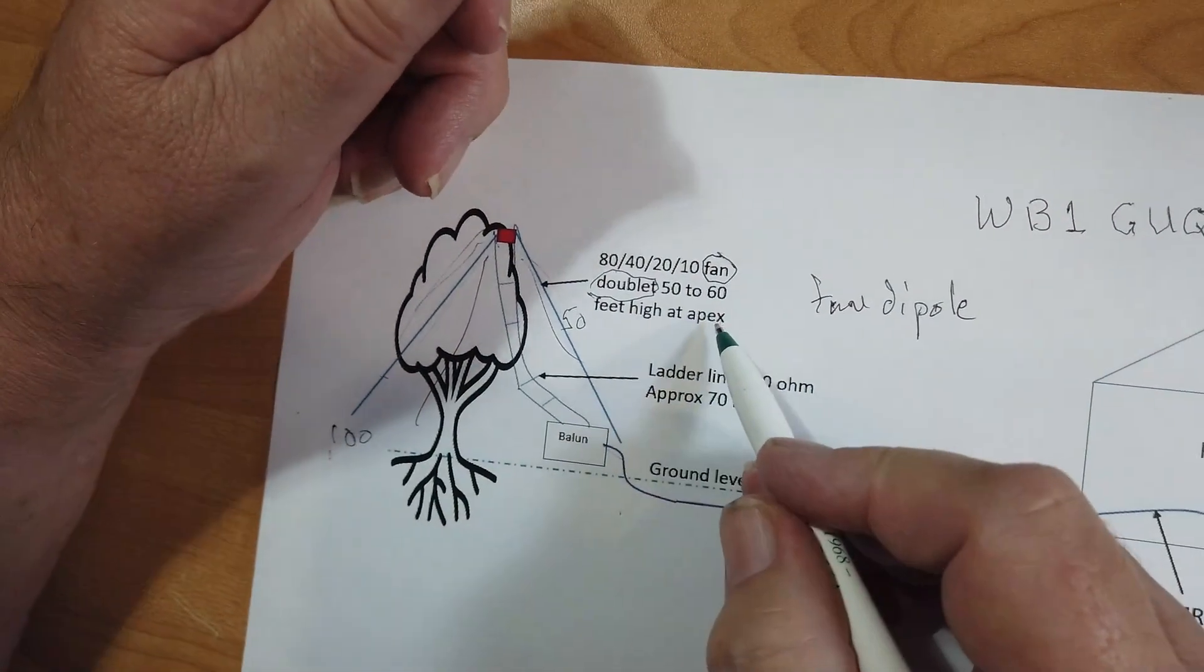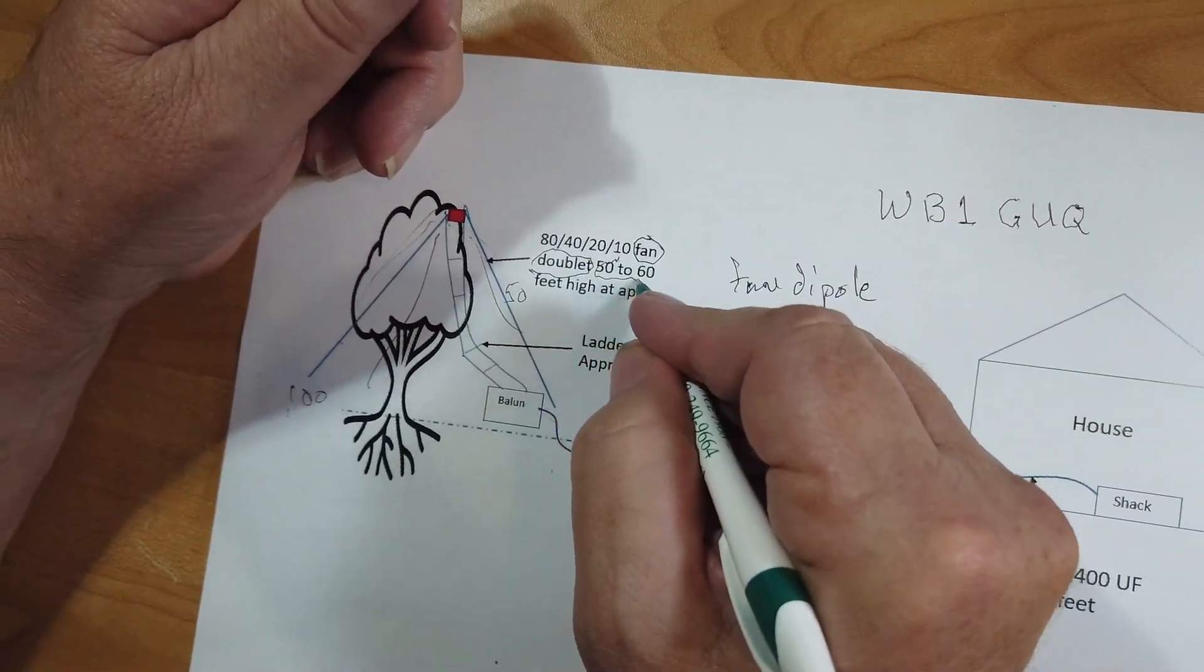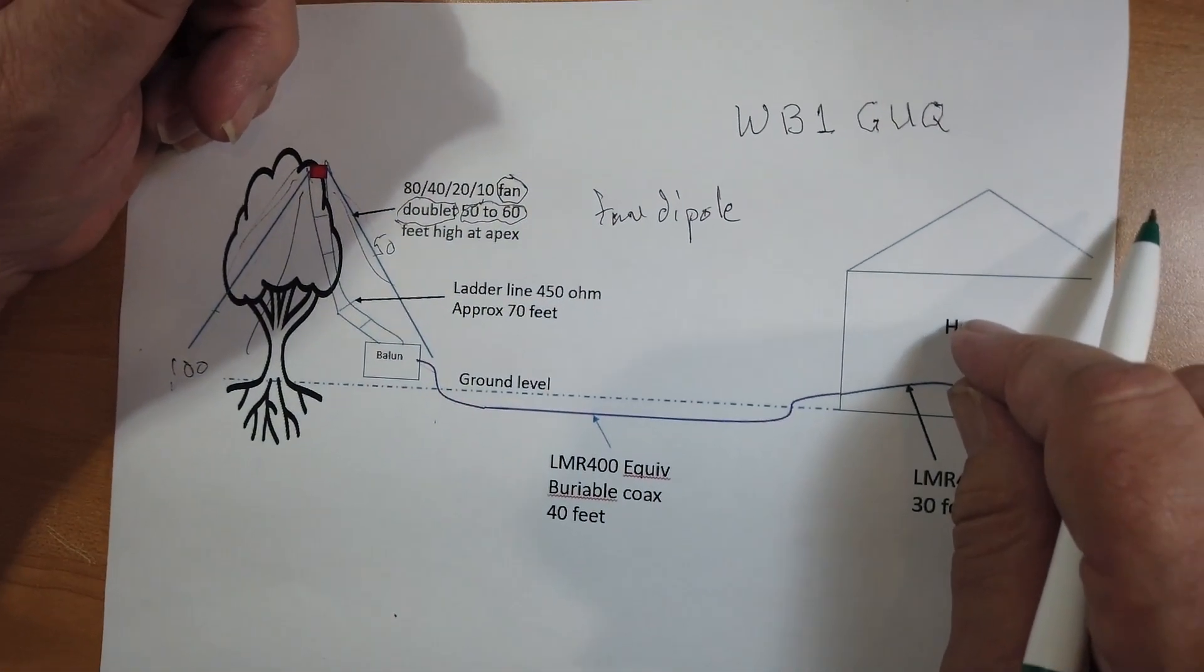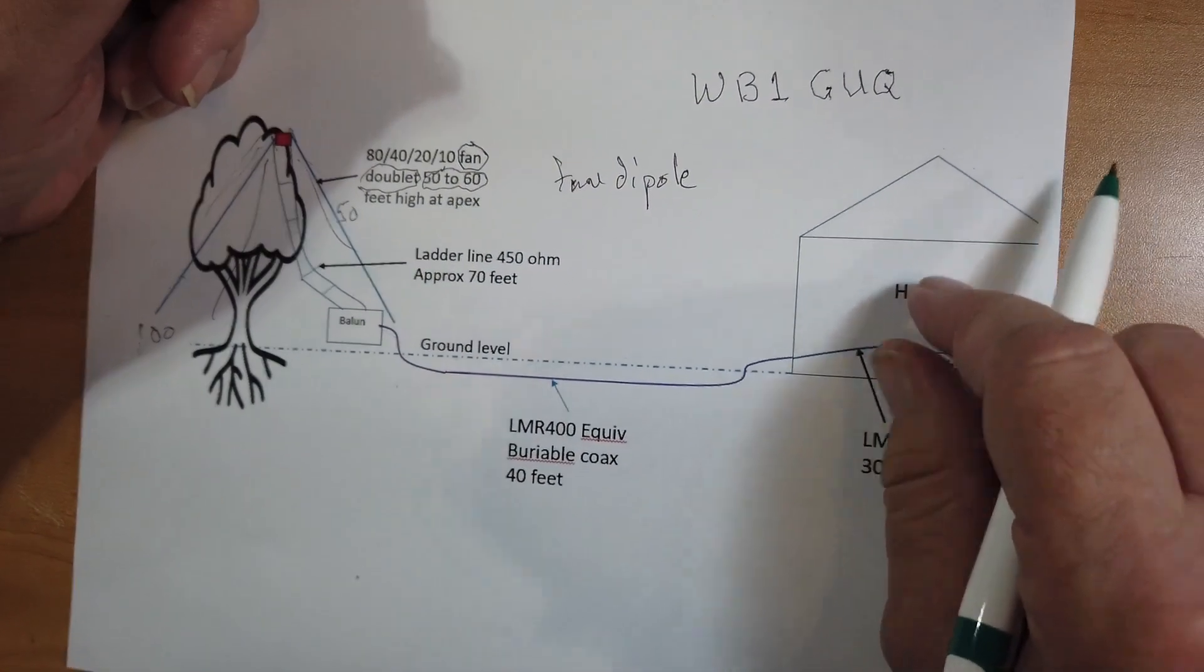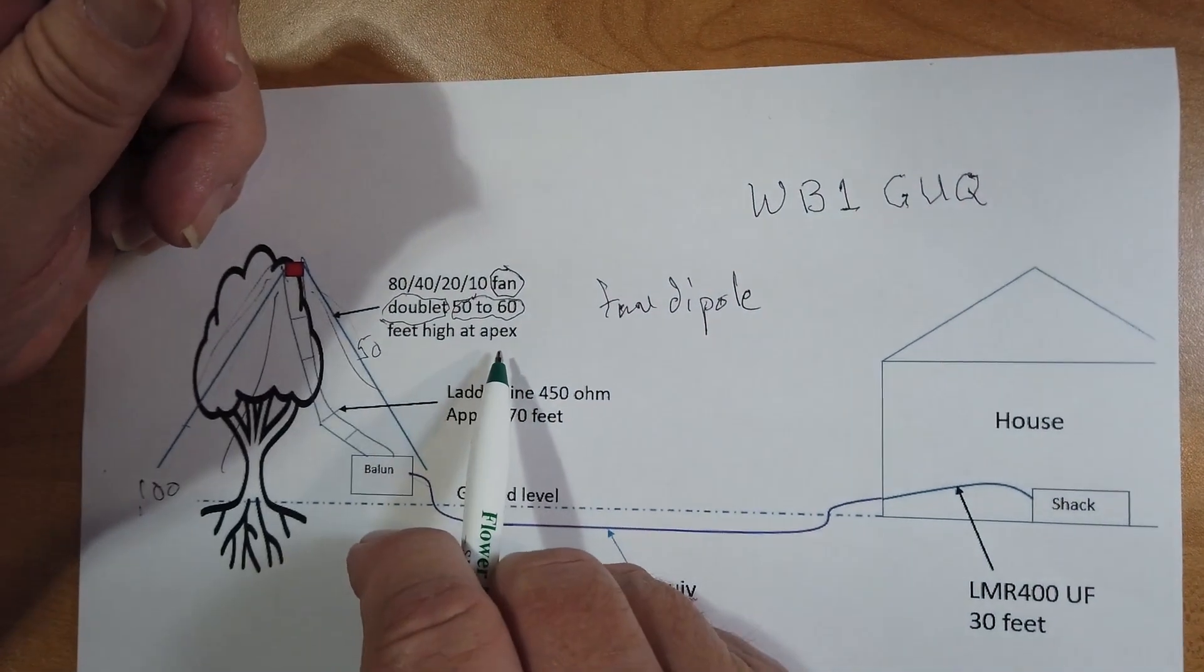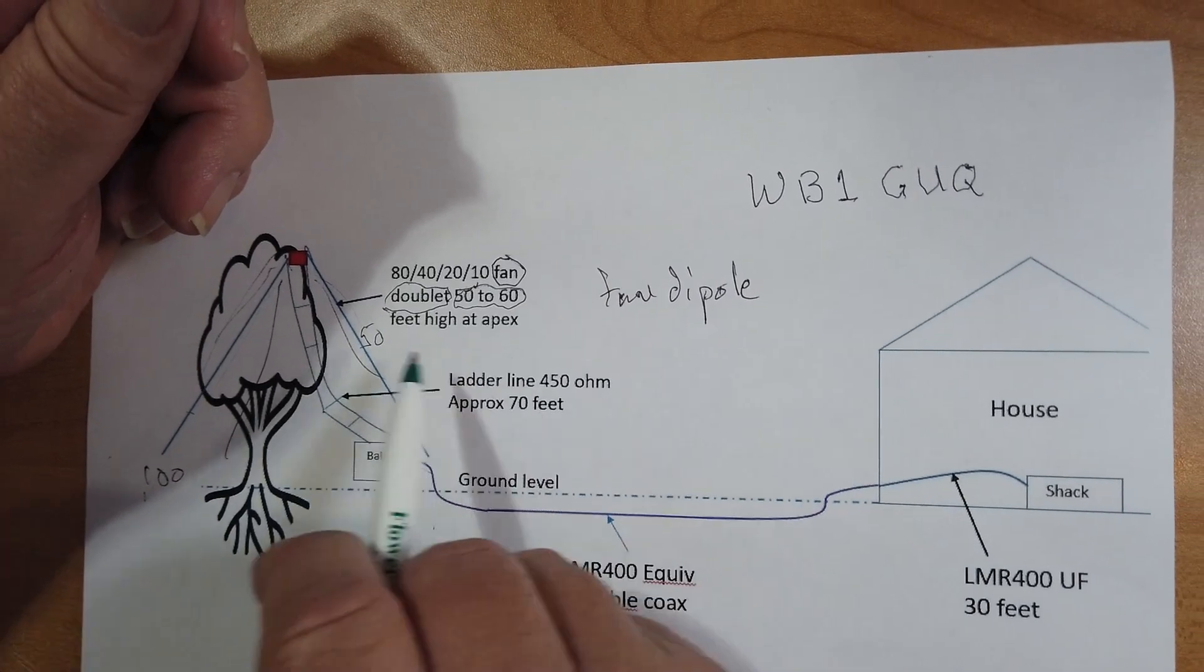Now, he's got a tree 50 to 60 feet high at the apex. Now, I've got to tell you how jealous I am looking at that. My trees top out at 35 feet, and they're not going to hold an antenna at that height, because that's the very top of the tree.